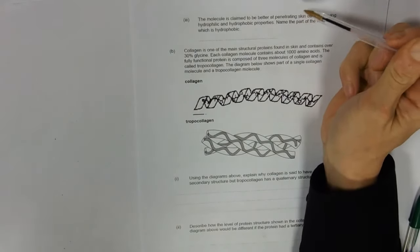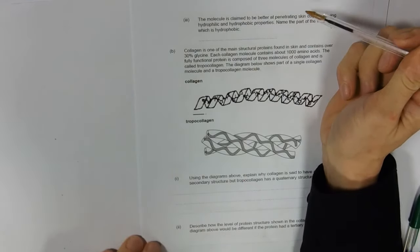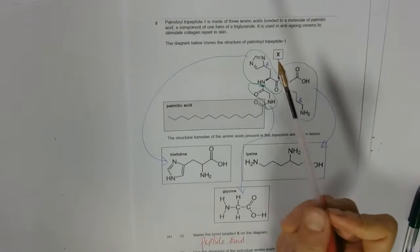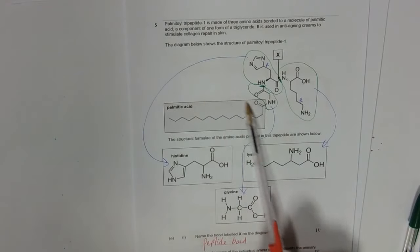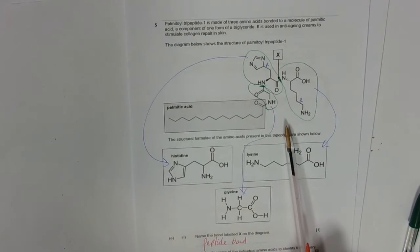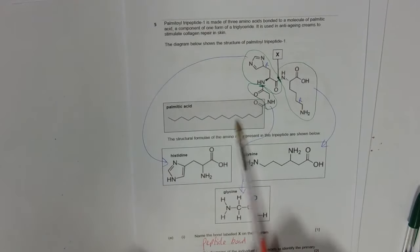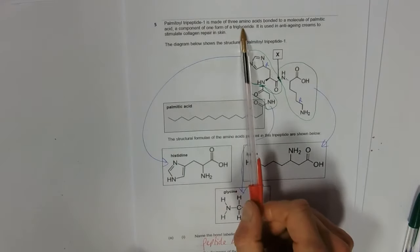The molecule is claimed to be better at penetrating skin due to having hydrophilic and hydrophobic properties. Name the part of the molecule which is hydrophobic. So this is going back to your knowledge of these different biological compounds. This palmitic acid is fatty acid - you know that from phospholipids and also in triglycerides. It says it's a component of triglycerides of fats, so that is the hydrophobic part - that's the palmitic acid component.